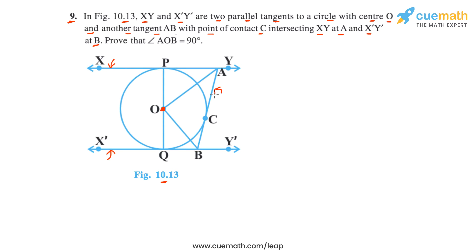So segment AB is also a tangent to the circle. The point of contact of this tangent is C, and this tangent intersects XY at A and X'Y' at B. We have to prove that angle AOB is equal to 90 degrees — the angle subtended by tangent AB at center O of the circle.